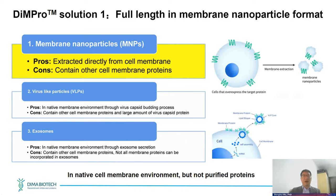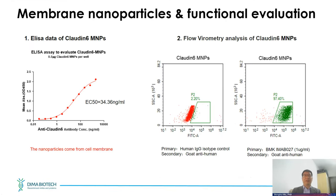Here is an example using our MMP technology to produce nanoparticles for Claudin-6, a four-transmembrane domain protein. The nanoparticles can be utilized for ELISA, as shown on the left, and also for flow cytometric analysis. The data shows that more than 97% of the vesicles contain our target protein, confirming highly even distribution of the protein on the vesicle surface.